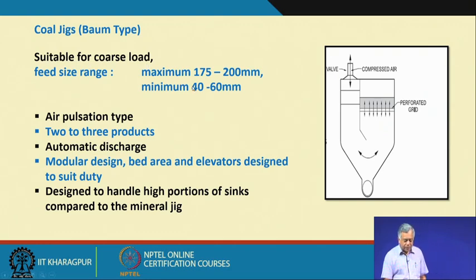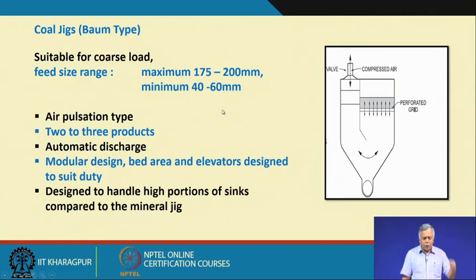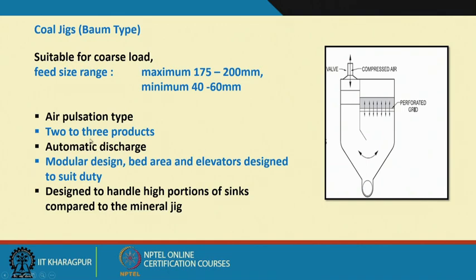It is mandatory that all particles should rest on the screen bed, since the screen is there only as a support. You have to control the particle size of the feed. The Baum jig accepts only relatively coarser particles, and pulsing is achieved by compressed air — it is called an air pulsation type jig. It can have 2 to 3 products.